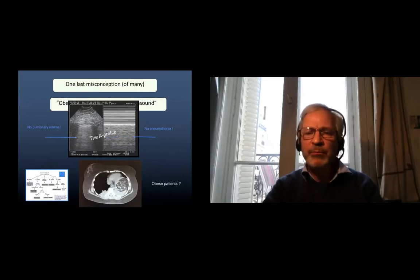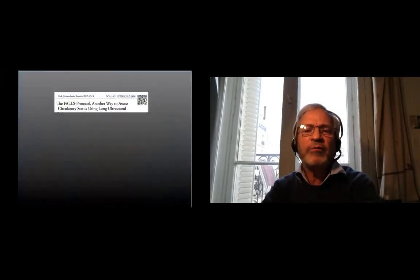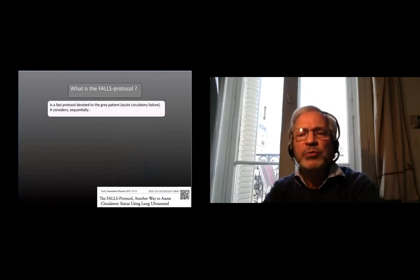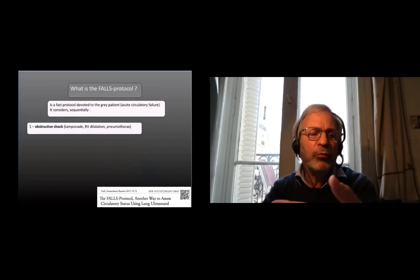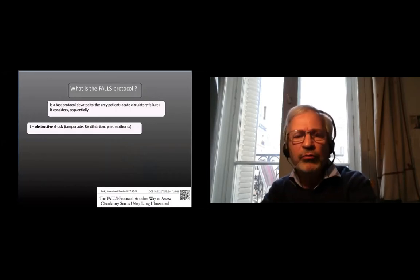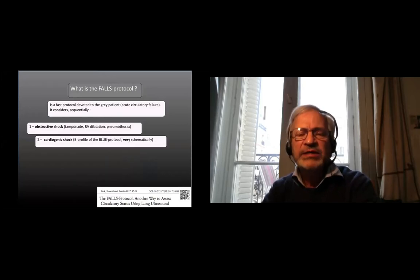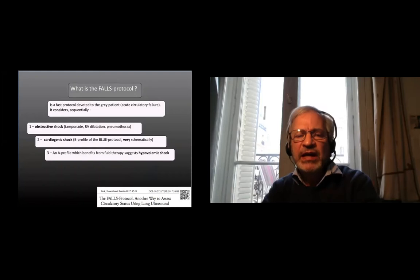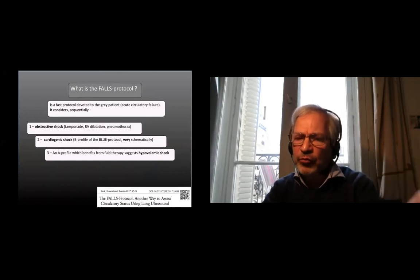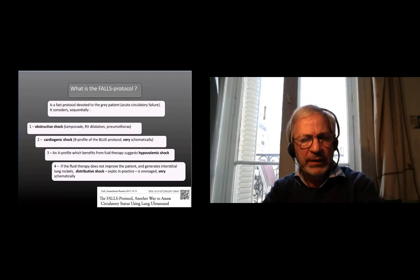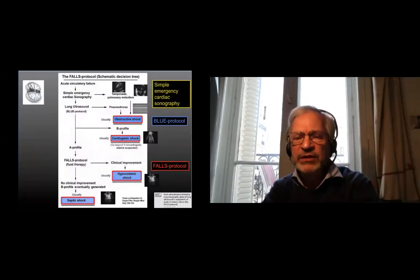So I will go rapidly on the FALLS protocol, which is devoted to acute circulatory failure, where we rule out obstructive shock by putting lung ultrasound for pneumothorax, and then we rule out cardiogenic shock by ruling out the B profile of the BLUE protocol. It's very schematic. And then when we have the A profile, we are enabled to have clearance for giving fluid therapy. I go too rapidly for not missing the end. This is the decision tree.